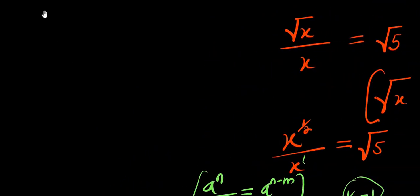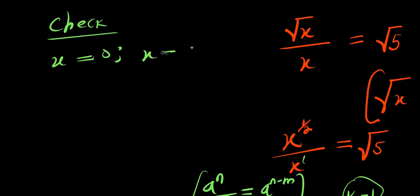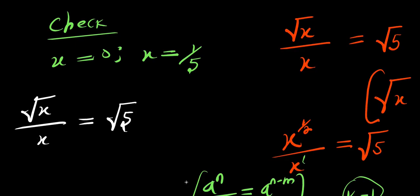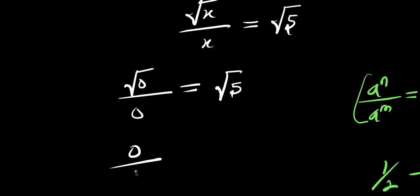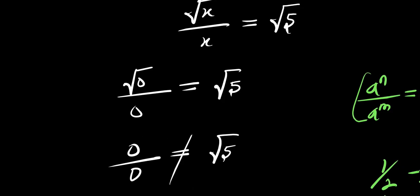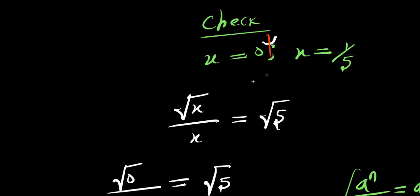We have two solutions to check: x equals 0 and x equals 1 over 5. The original equation is square root of x divided by x equals square root of 5. If x is 0, we have square root of 0 divided by 0, which would need to equal square root of 5. But square root of 0 is 0, and 0 divided by 0 is undefined or indeterminate — not the same as square root of 5. So x equals 0 is a false solution.